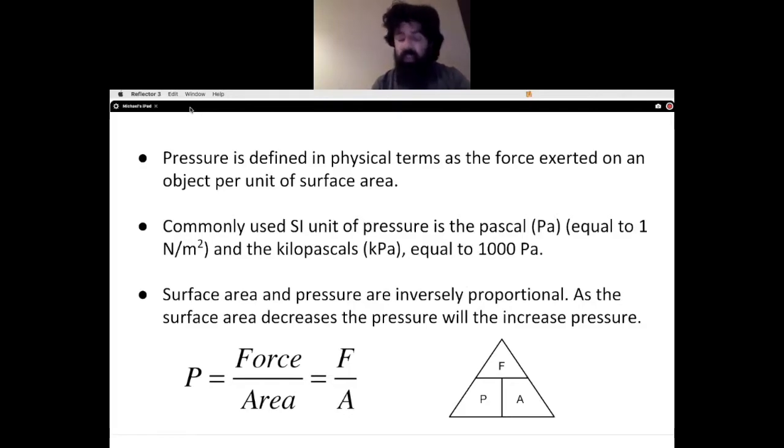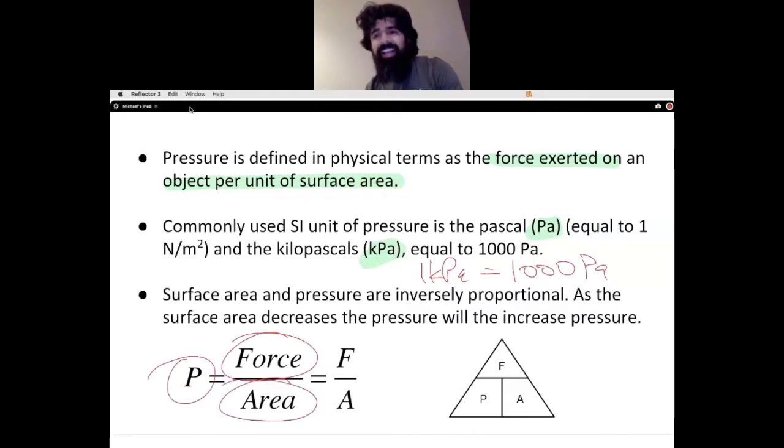Pressure is a very important set of units when dealing with gases. Pressure is defined as the physical term as a force exerted on an object per unit of surface area. Common units that we're going to be using for pressure are Pascal and kilopascal. One kilopascal is equivalent to 1,000 pascals.